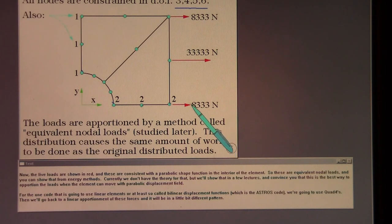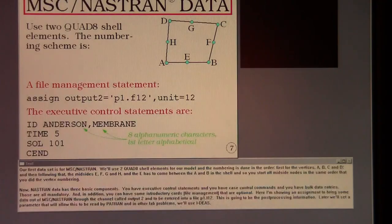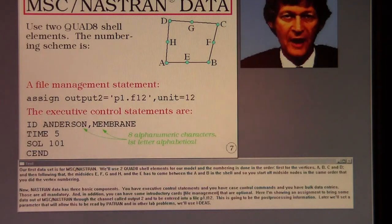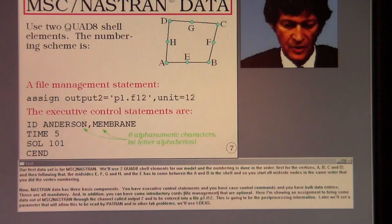For the one code that is going to use linear elements, or at least so-called bilinear displacement functions, which is the Astros code, we're going to use quad fours. Then we'll go back to a linear apportionment of these forces and it will be in a little bit different pattern.